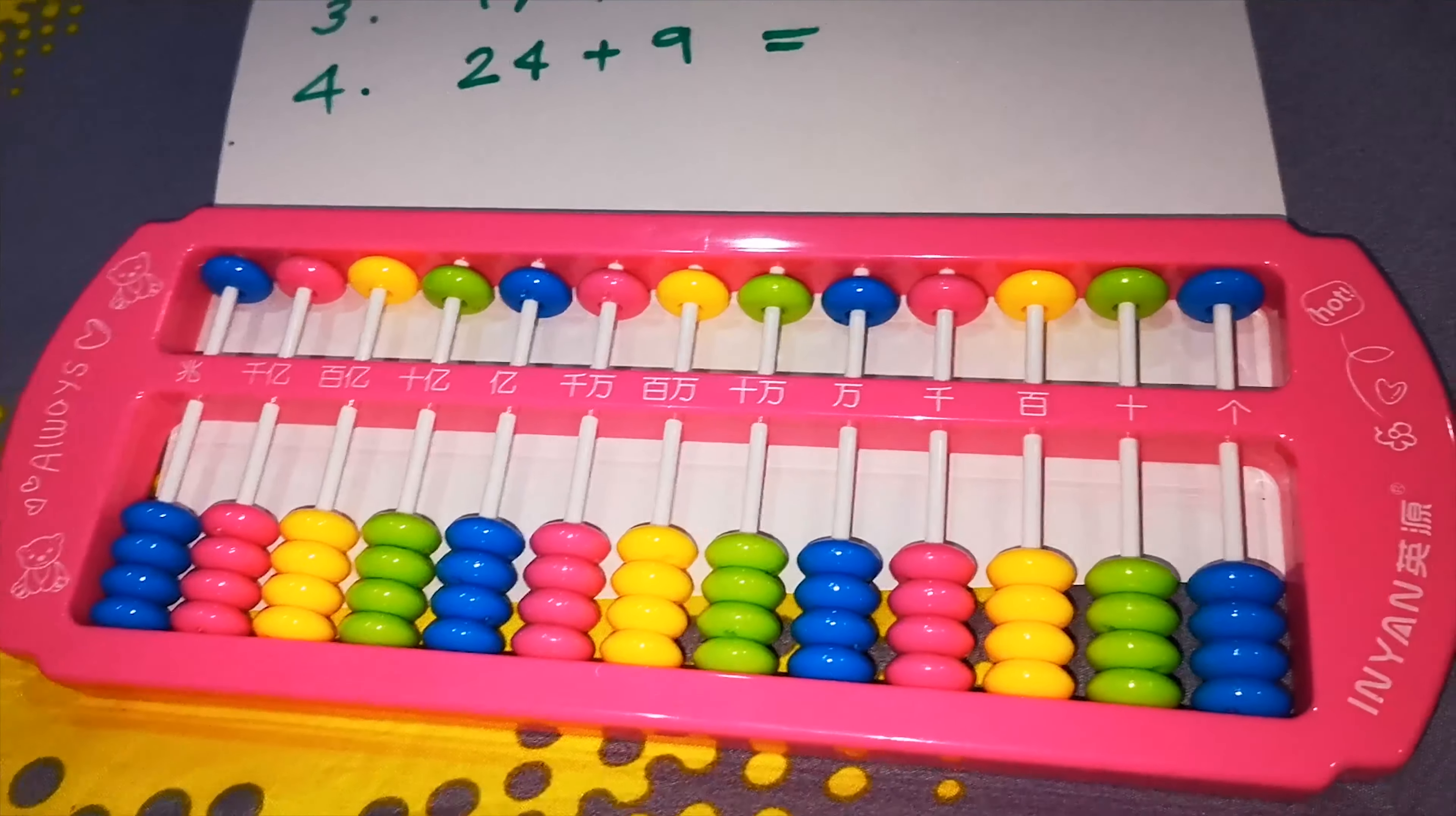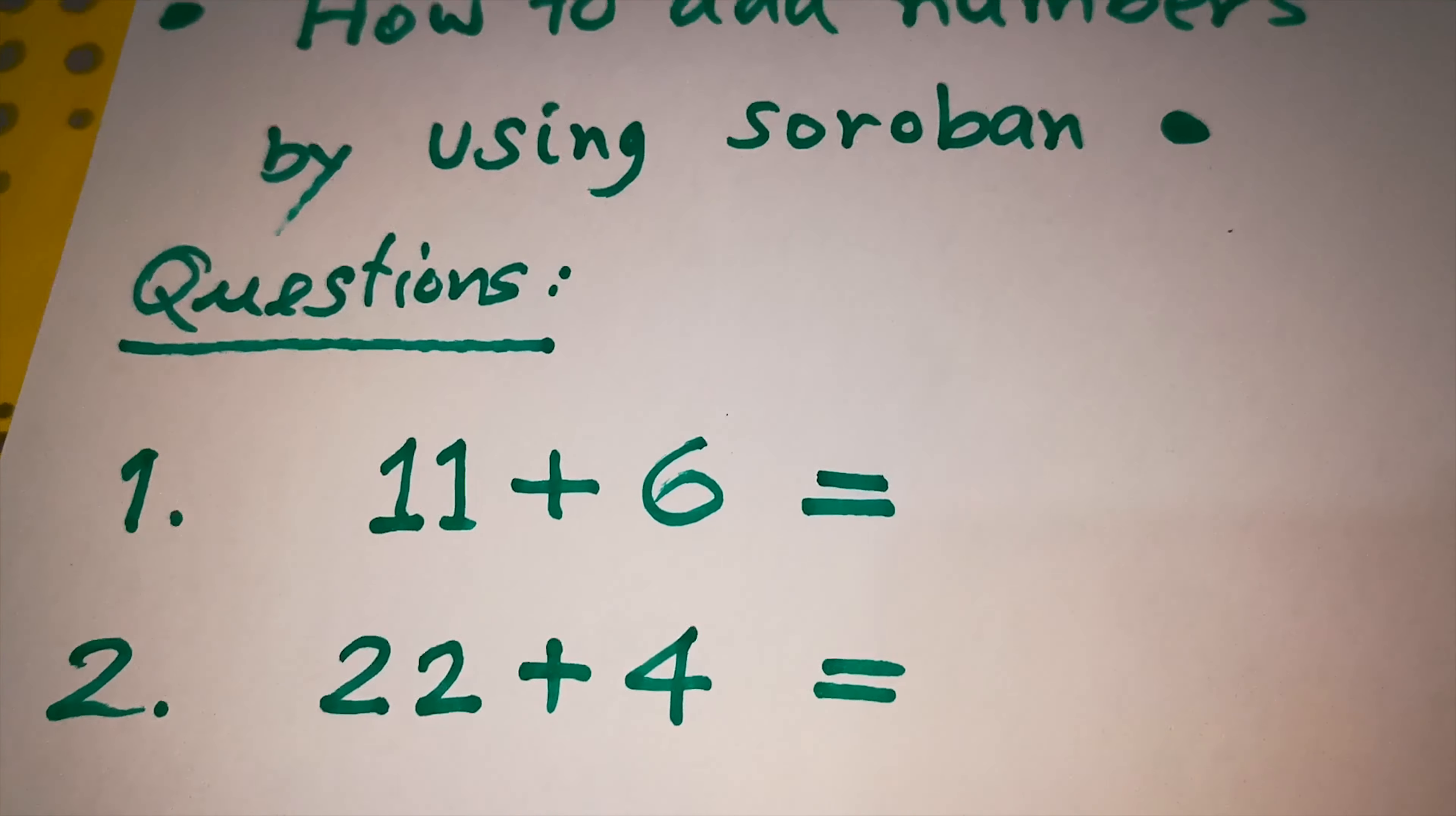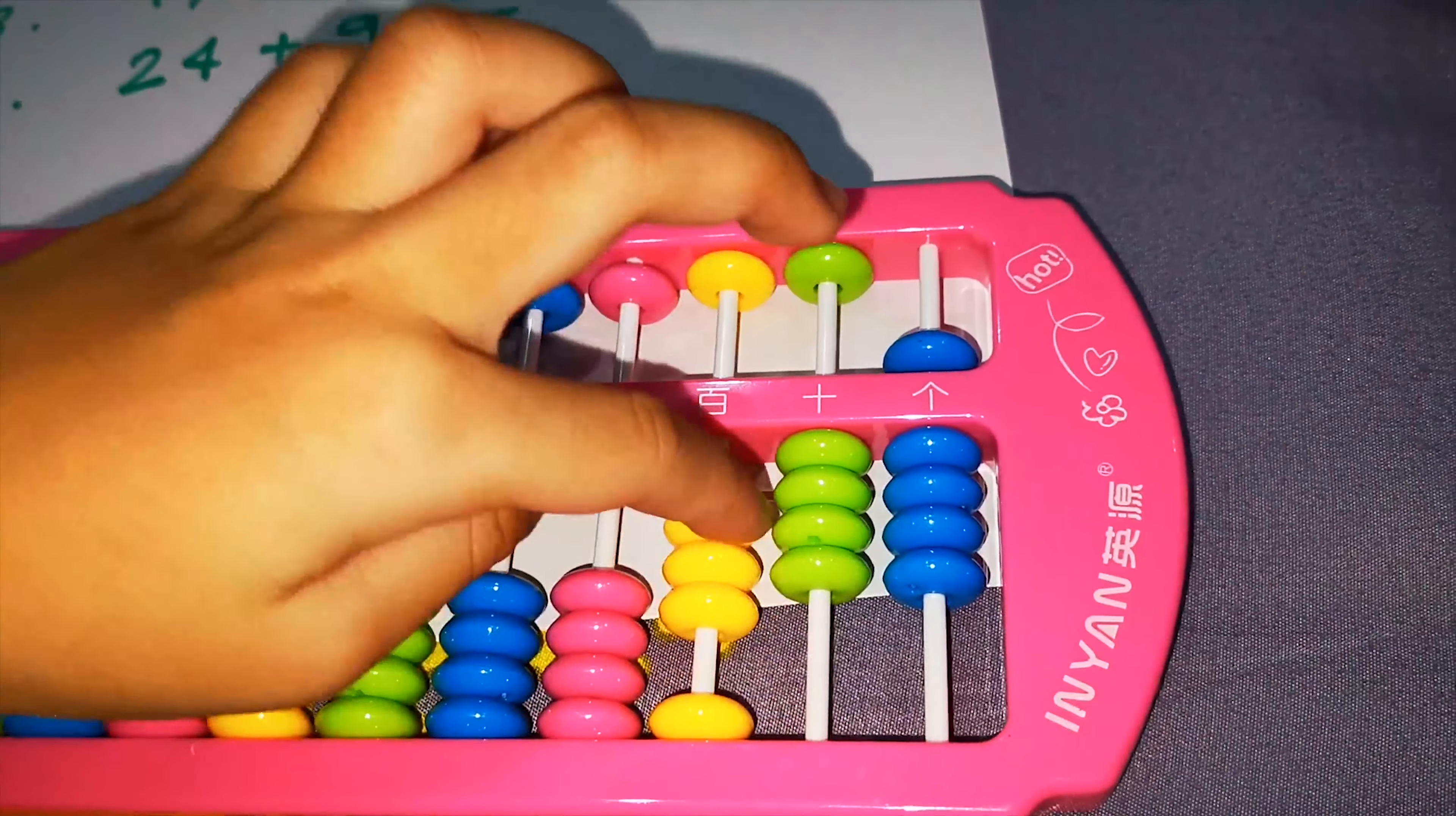Hi everyone! Today I'm going to show you how to add numbers by using soroban. This is 5, this is 4, this is 40, this is 50.